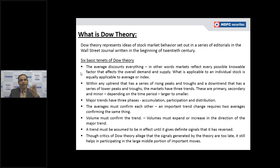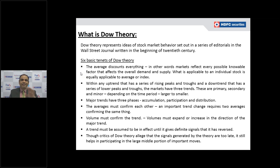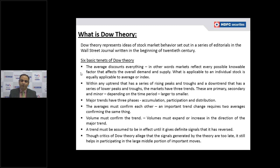The same pattern in reverse happens during downtrends. When the stock breaks below the support, a low is formed, short covering happens, the stock shows upside correction forming a minor lower top, and then declines below the previous low. For example, from 100 to 90 forms a lower bottom; short covering moves it up to 96–97, which becomes a lower top; then it breaks below 90 to 85, forming a new lower bottom.